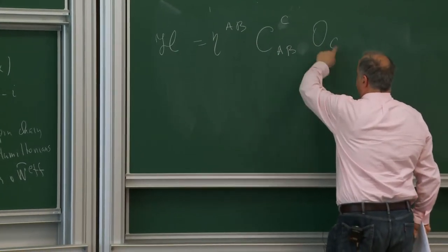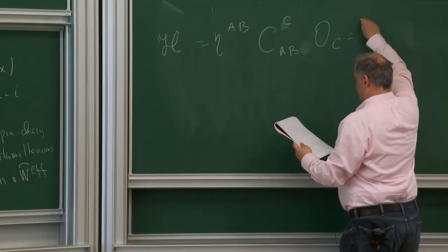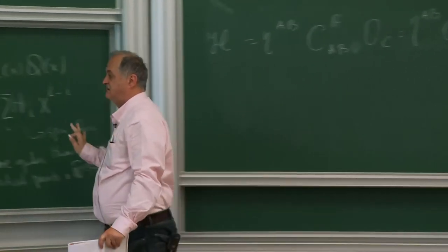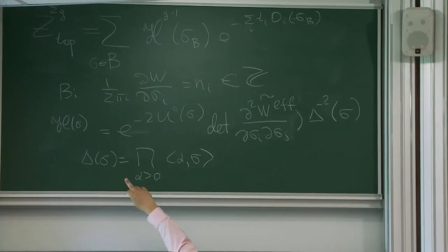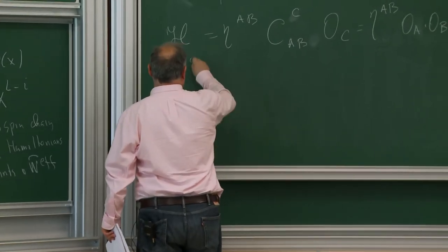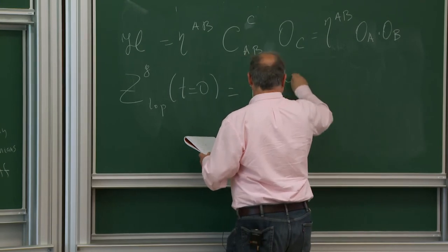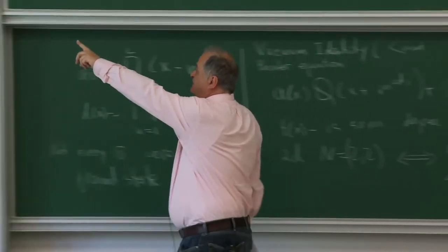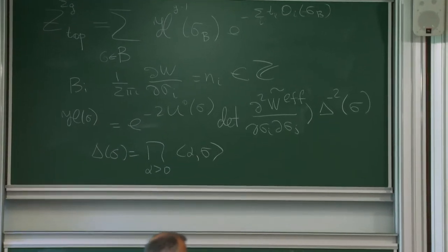So H can be written also as a two-point function, because we have the metric which was defined in terms of the three-point function. This is the same thing as eta^AB times O_A dot O_B. If we don't put in the exponential these T_i*O_i's and just calculate for T equals zero, then Z_topological on genus G at T equals zero will be just the trace of this operator to the power G minus 1. That relates the handle-gluing operator in abstract description with a particular formula written here. Now I have to say what U_0 is.